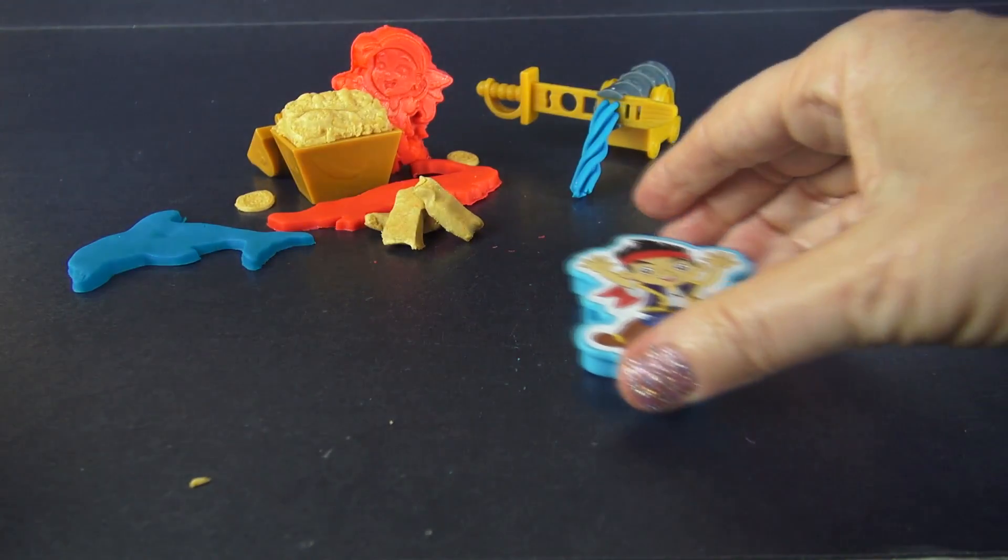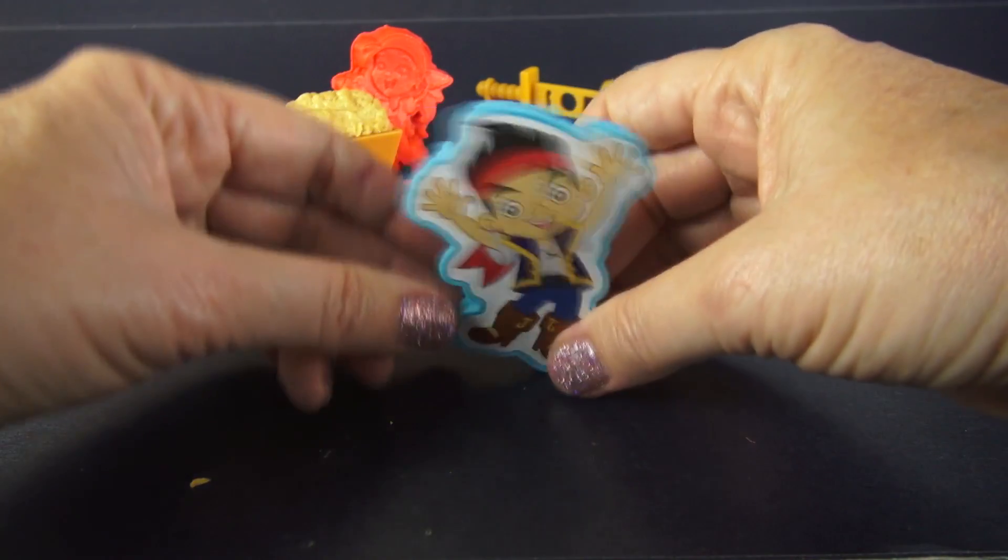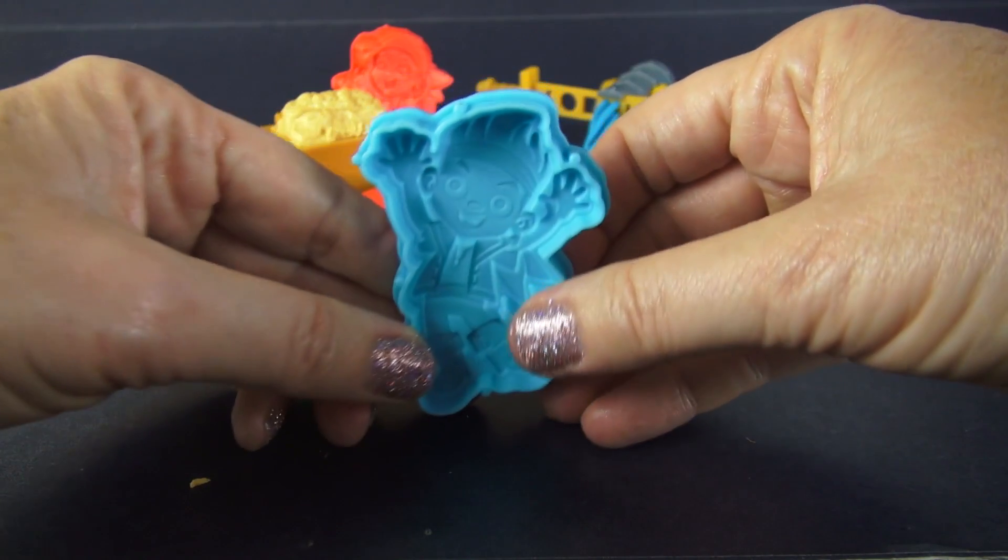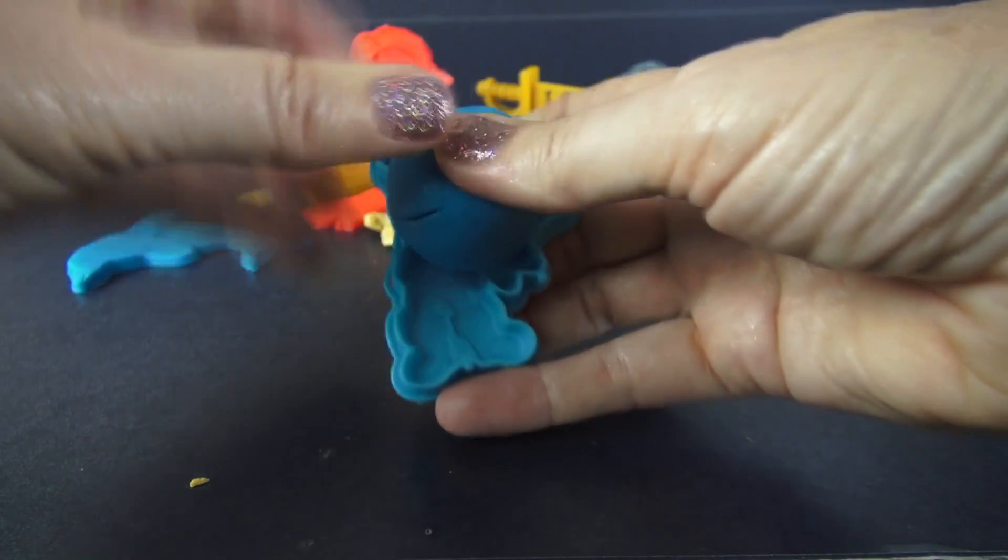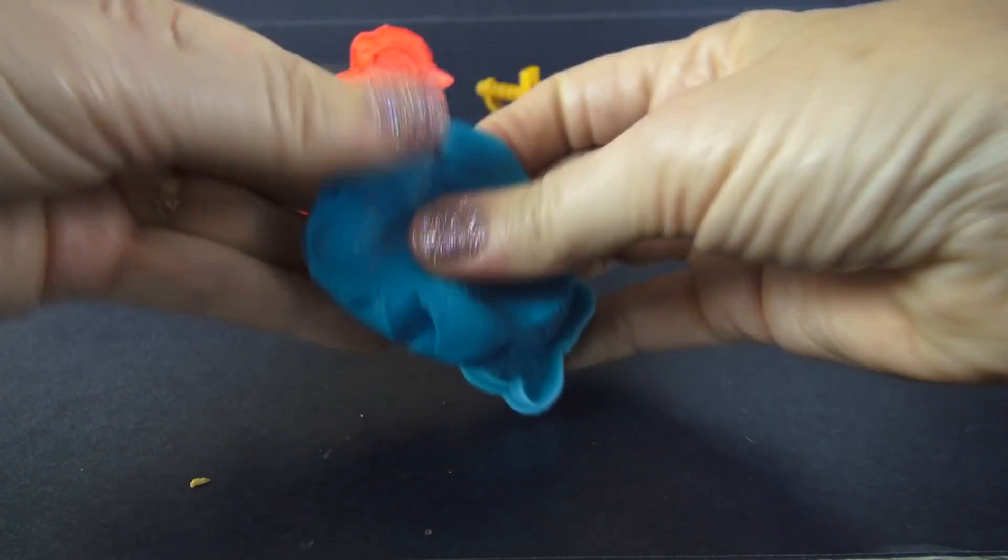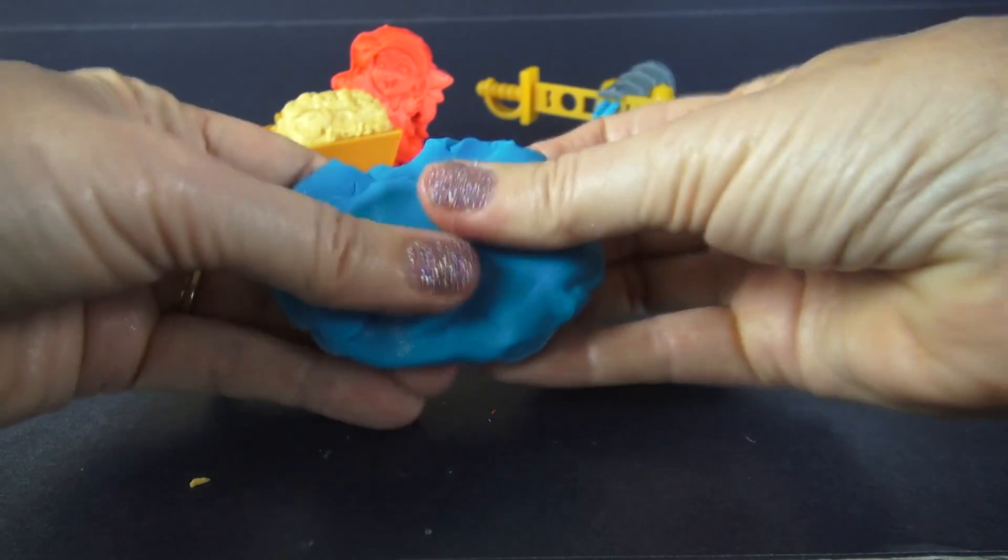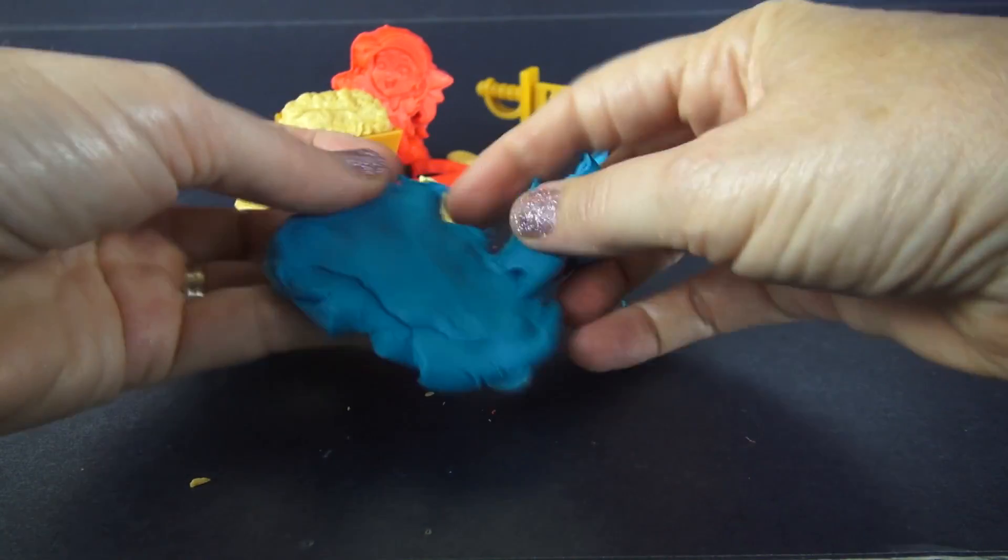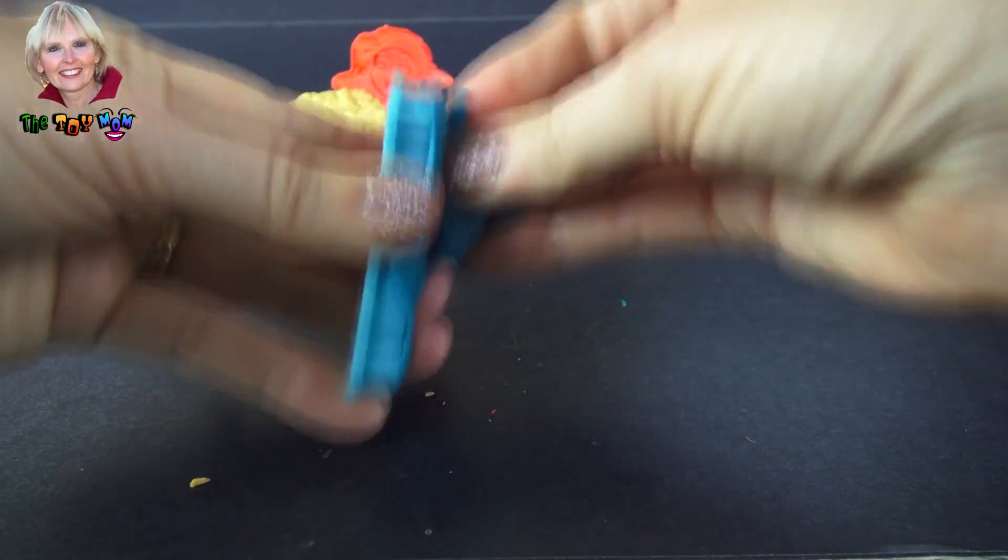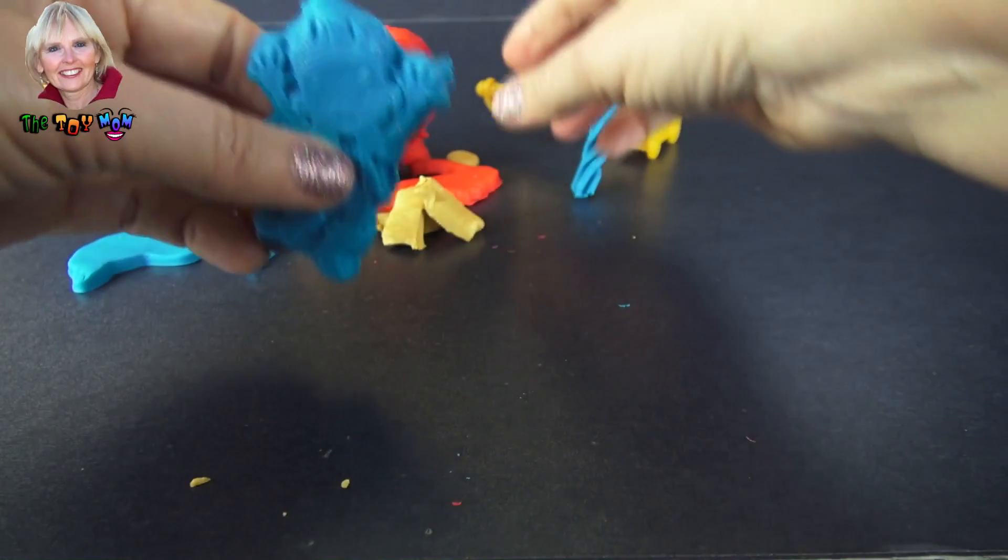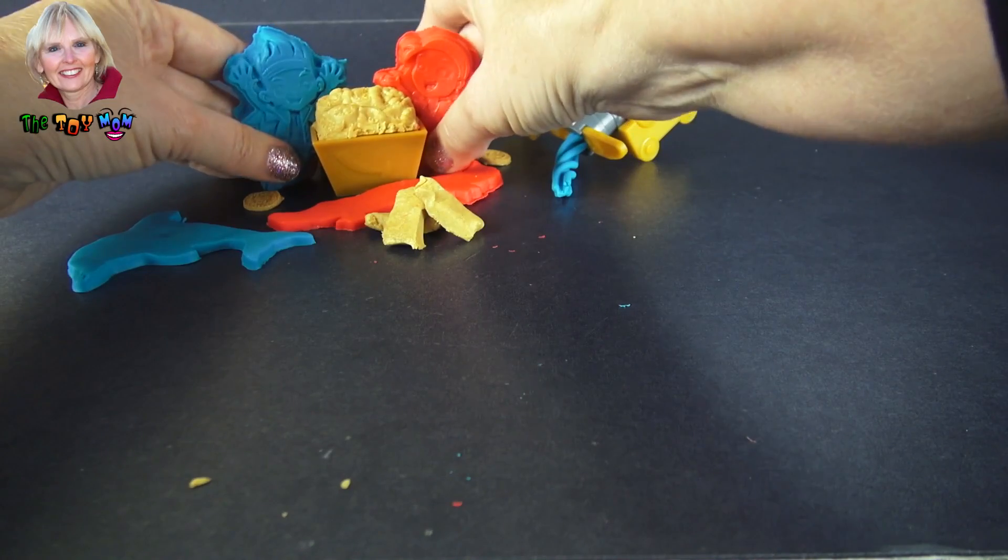In fact, we've got so much gold now that I think we need heavy duty protection in the form of Jake. So here's the Jake mold. A lot of detail in there too. So I think I'll make Jake out of the blue Play-Doh. So I'll push it in there. All right, Jake.